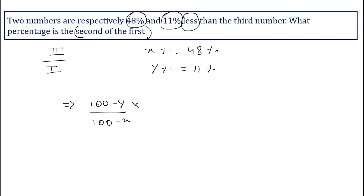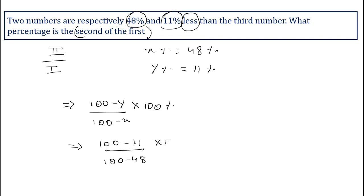Here, y is in the numerator because the second is compared with the first — so y in the numerator and x in the denominator. Substituting the known values of x and y into the formula gives: (100 minus 11) upon (100 minus 48) into 100 percent.